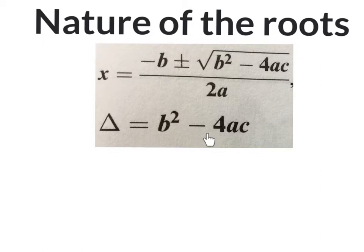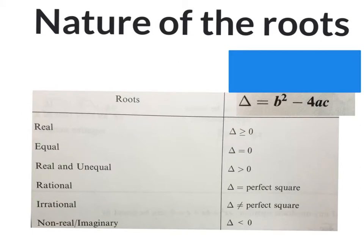This formula comes out of the quadratic formula — from underneath the square root in the quadratic formula. Before you can answer a question on nature of the roots, this table should be summarized somewhere on a page for yourself. If they say the roots are real, then you know delta will be bigger than or equal to zero.